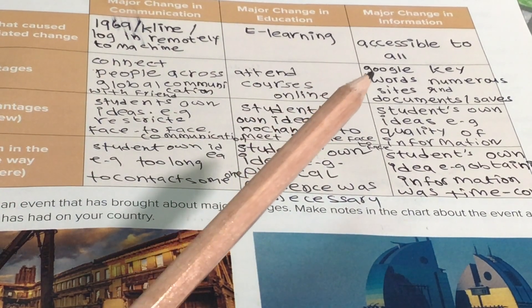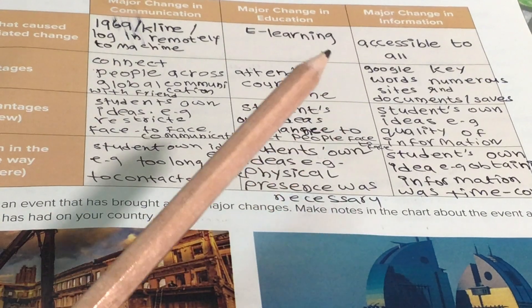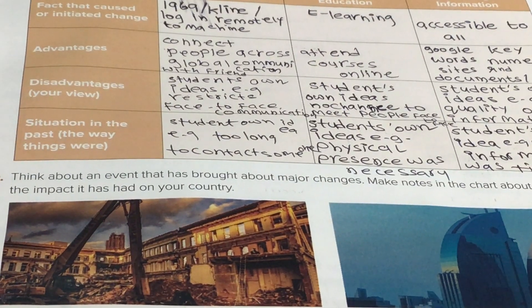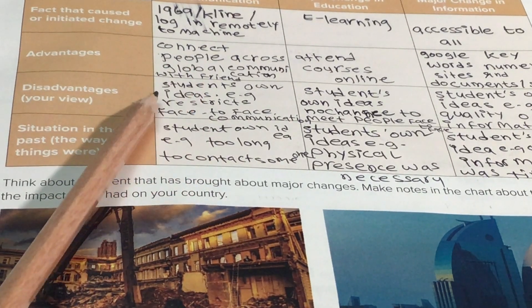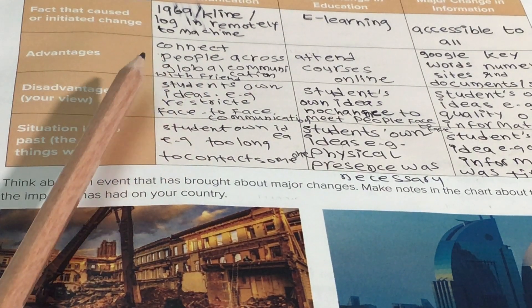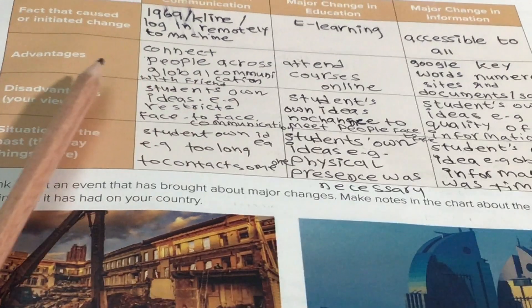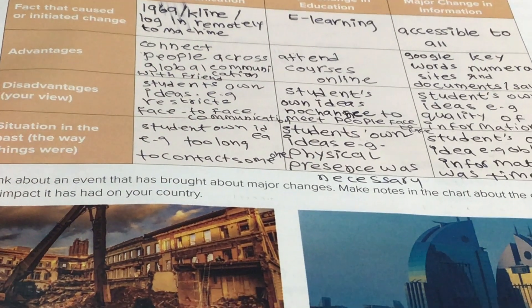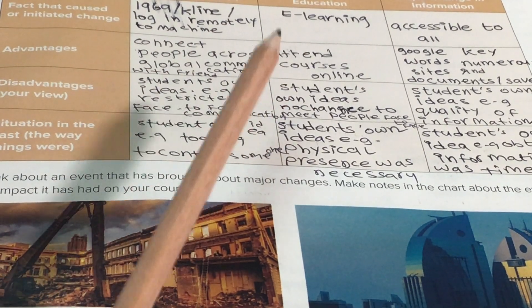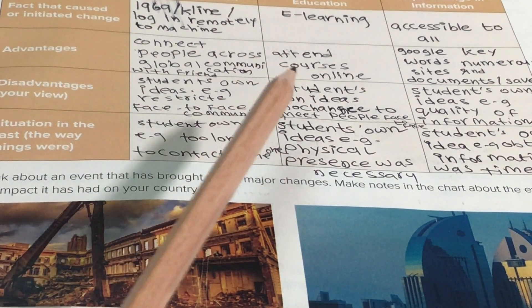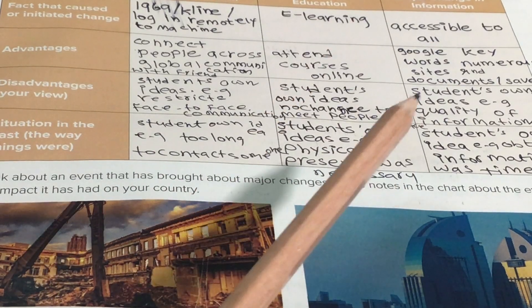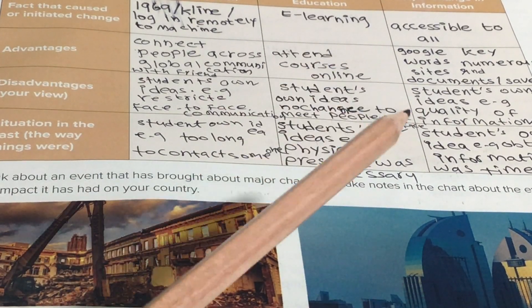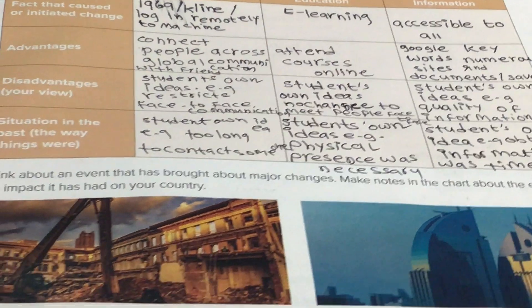Major change: information accessible to all - متاحة للجميع. Advantages: connect people across the globe, communication with friends - تستطيع أن تتصل بجميع الناس في أنحاء العالم وأصدقائك أيضاً. Attend courses online, and Google keywords to find numerous sites and documents - تستطيع حضور الدورات عبر الإنترنت والحفاظ على المستندات عن طريق Google.